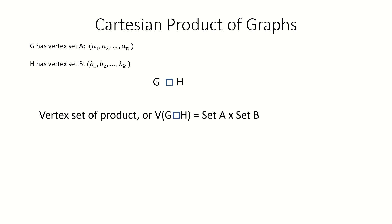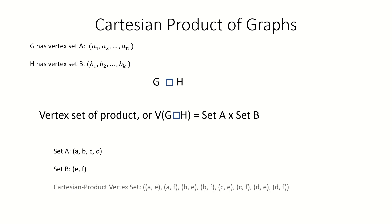Here's an example. If graph G's vertex set A was this and graph H's vertex set B was this, the vertex set of their Cartesian product would be this. Note that due to the properties of the Cartesian product, the Cartesian product graph will have as many vertices as the product of the number of vertices of its factor graphs.